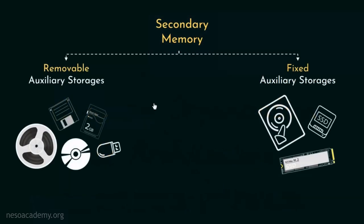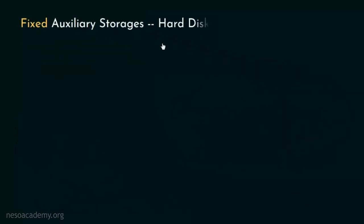During our last session, we observed that secondary memory storages can be broadly classified into two categories: the removable auxiliary storages and the fixed auxiliary storages. We also learnt about all the different removable auxiliary storages. From this session onwards, we will start learning about the fixed auxiliary storages, and particularly in this session, we will be properly introduced to the fixed auxiliary storage — hard disk drive.